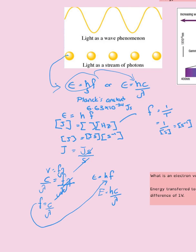Since H is a constant, the energy of a photon is directly proportional to the frequency. If you double the frequency of the wave, the energy of the photon will also double. In the case of wavelength, energy is inversely proportional to wavelength because H and C are both constants. So if you double the wavelength of the wave, the energy of the photon halves. You should be able to make these clear statements and show them with graphical values if asked in exam questions.